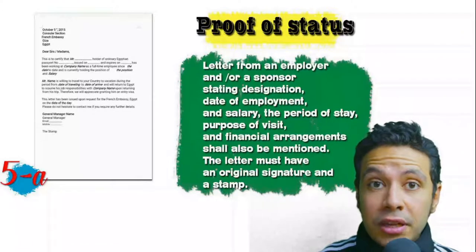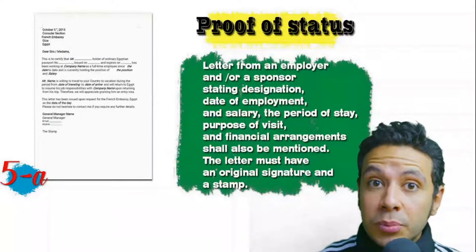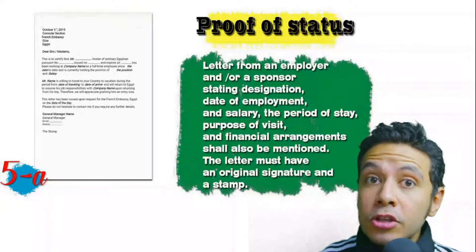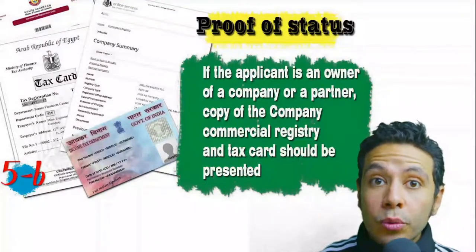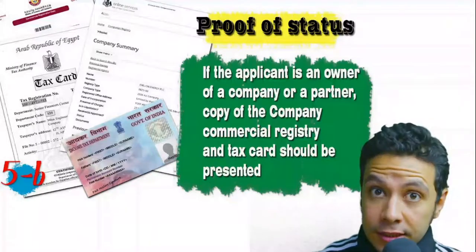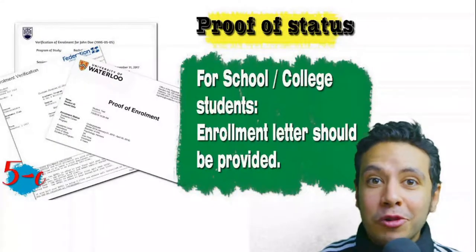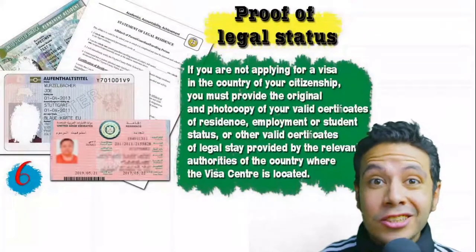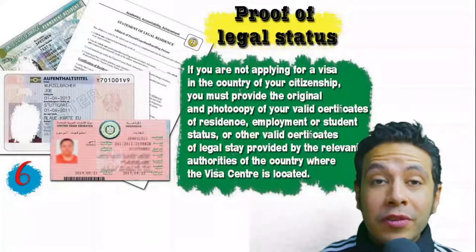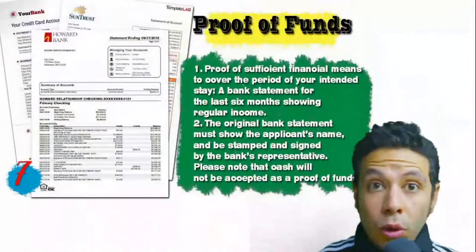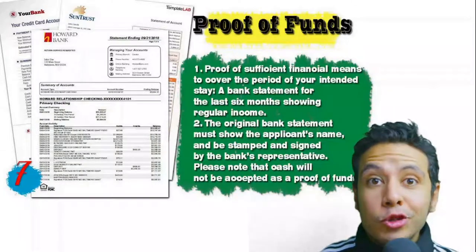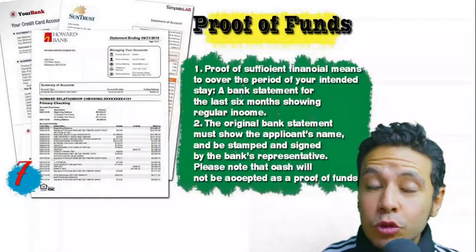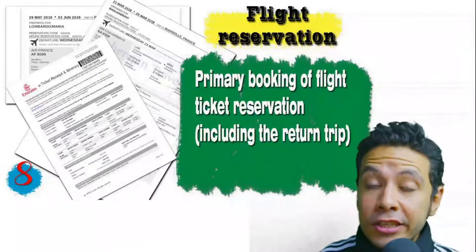In most visa application processes you will need to provide proof of status. If you are an employee, provide a letter from your employer or HR department mentioning your name, work details, salary, address, and contact numbers — with an original signature and stamp. If you own a business, present your commercial registry and tax card. If you are a student, provide an enrollment letter from your university or school. If applying from a country different than your own, provide a certificate of legal residence or a valid residence visa. You also need to provide proof of sufficient funds: a bank statement for at least six months, original, signed and stamped by the bank — cash is not accepted as proof of funds.